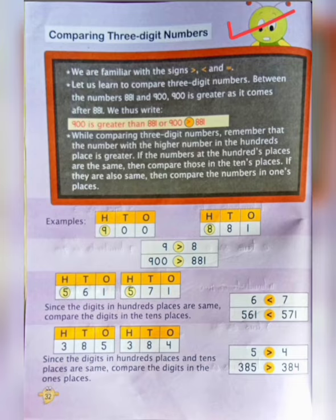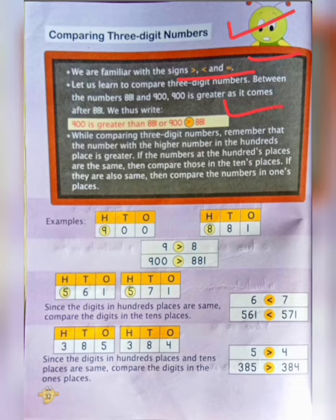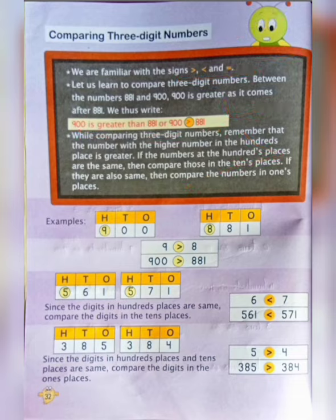We are familiar with the signs greater than, less than, or equal to. While comparing 3-digit numbers, remember that the number with the higher digit in the hundreds place is greater. If the digits at the hundreds places are the same, then compare those in the tens place. If they are also the same, then compare the digits in the ones place.